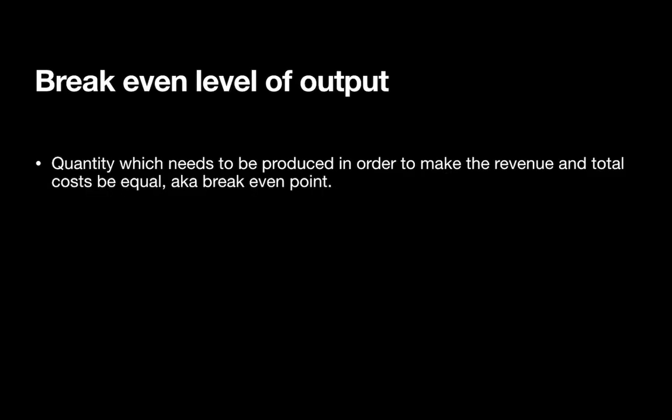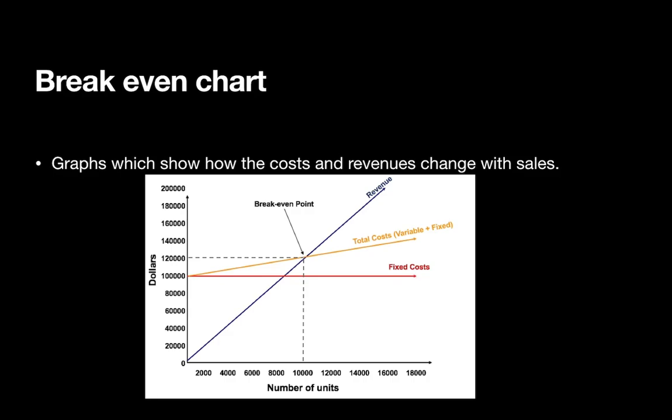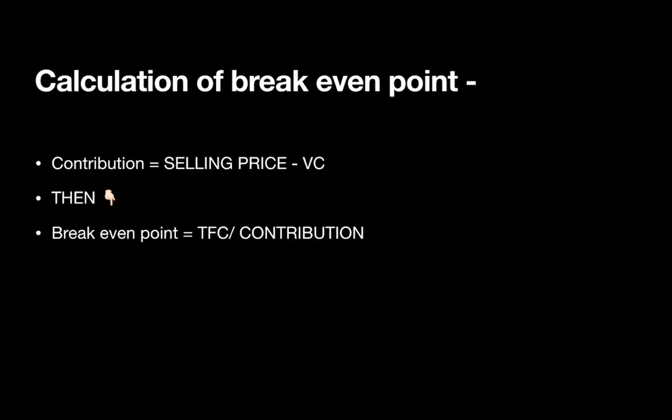The break-even level of output is the quantity which needs to be produced in order to make revenue and total costs equal. This point is also known as the break-even point. A break-even chart is a graph which shows how cost and revenue change with sales. The revenue will start from zero, as will the variable cost. The fixed cost will be a horizontal line, and variable cost plus fixed cost equals total cost. The point where the revenue and total cost lines intersect is called the break-even level of output.